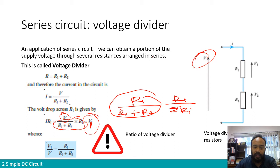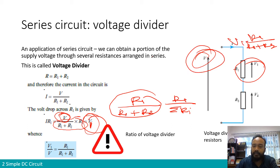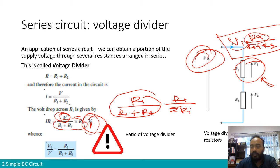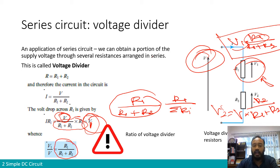So V1 is a portion of V, where the ratio is R1 / (R1 + R2). Similarly, V2 = V · R2 / (R1 + R2). This ratio is called the voltage divider ratio. To find V1, multiply total voltage V by R1 / (R1 + R2). To find V2, multiply V by R2 / (R1 + R2). This is what we call a voltage divider, and we'll apply it frequently.